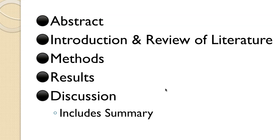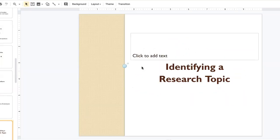A research article in a journal will have an abstract — basically a summary of the whole paper — followed by an introduction and review of the literature, a methods section, a results section, and a discussion section. For this class, you'll write an introduction and review of the literature plus a methods section. We'll stop there — no data collection. This gives you an idea of what goes into a research article. We'll stop here and pick up with identifying a research topic in the next section.